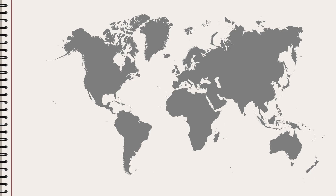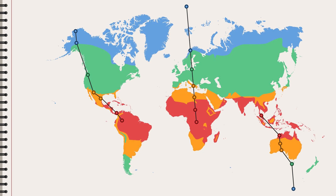We started our journey in Africa and traveled north through Europe to the North Pole. It looks about the same if we make a similar journey from the equator to one of the poles in other parts of the world. Therefore we can divide the earth into four climate zones.